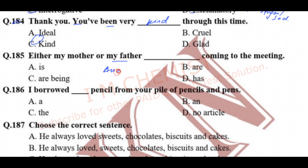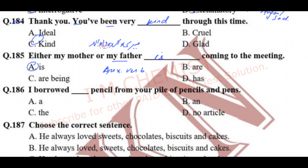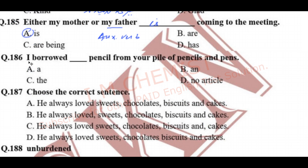Question number 185: 'Either my mother or my father is coming to the meeting.' What auxiliary verb should we use here? The right option is 'is'. With the 'either...or' expression, only one person is referenced — not both — so we use the singular auxiliary verb 'is'.